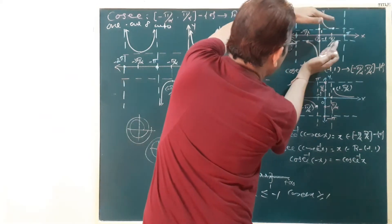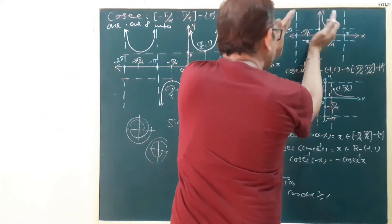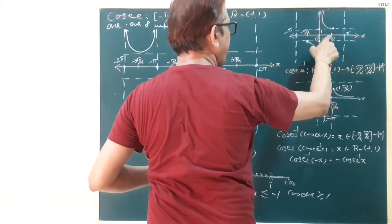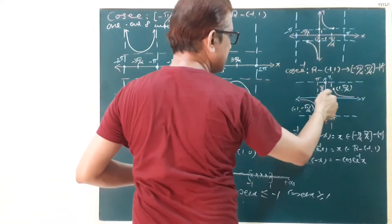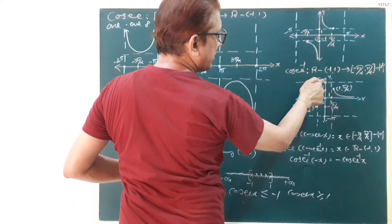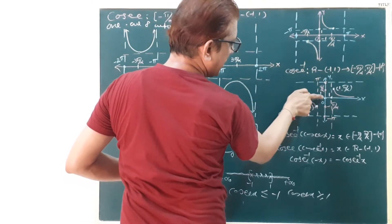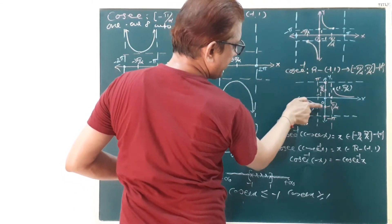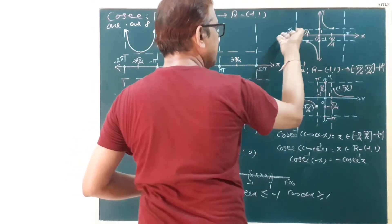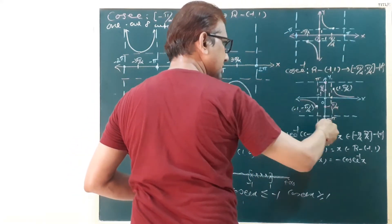In this graph, we rotate anticlockwise. Now: 0, pi by 2, and pi, which were on the x-axis, are now on the y-axis. And 0, minus pi by 2, and minus pi below the x-axis are now on the y-axis. This point which was on the x-axis is now on the y-axis.